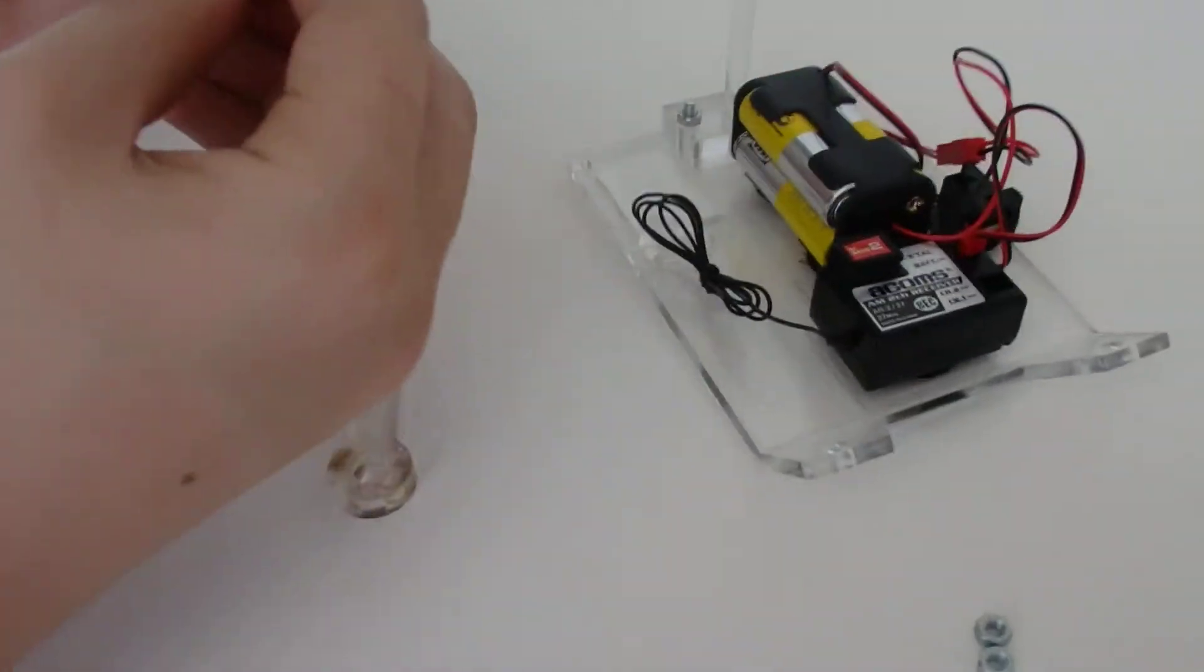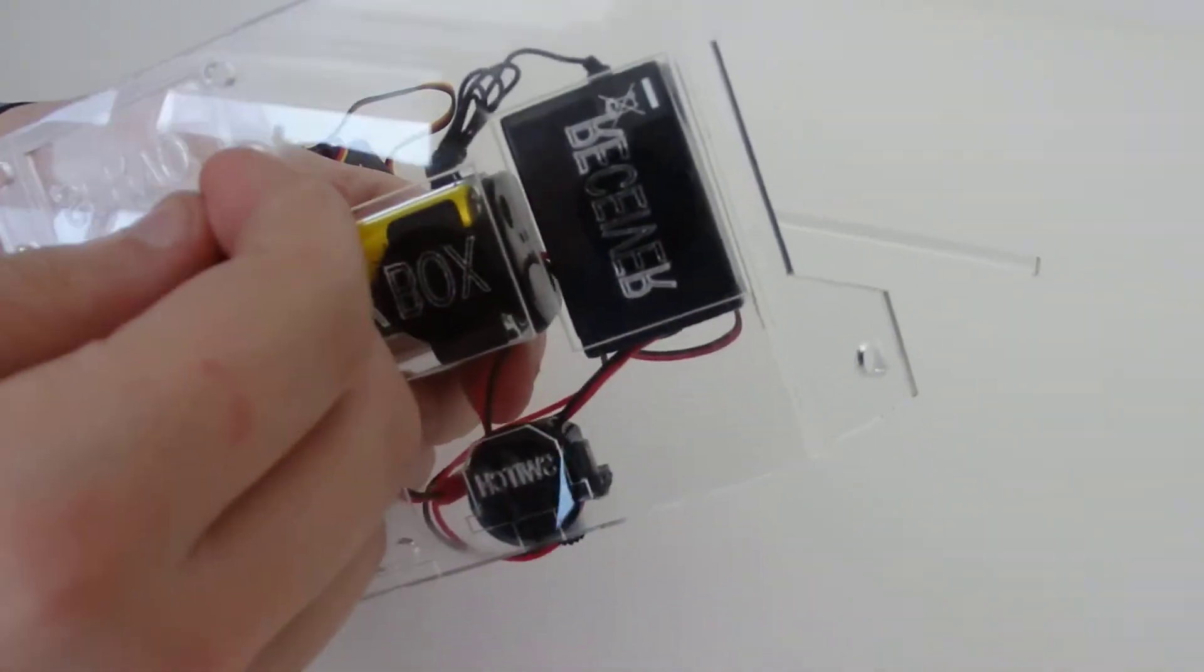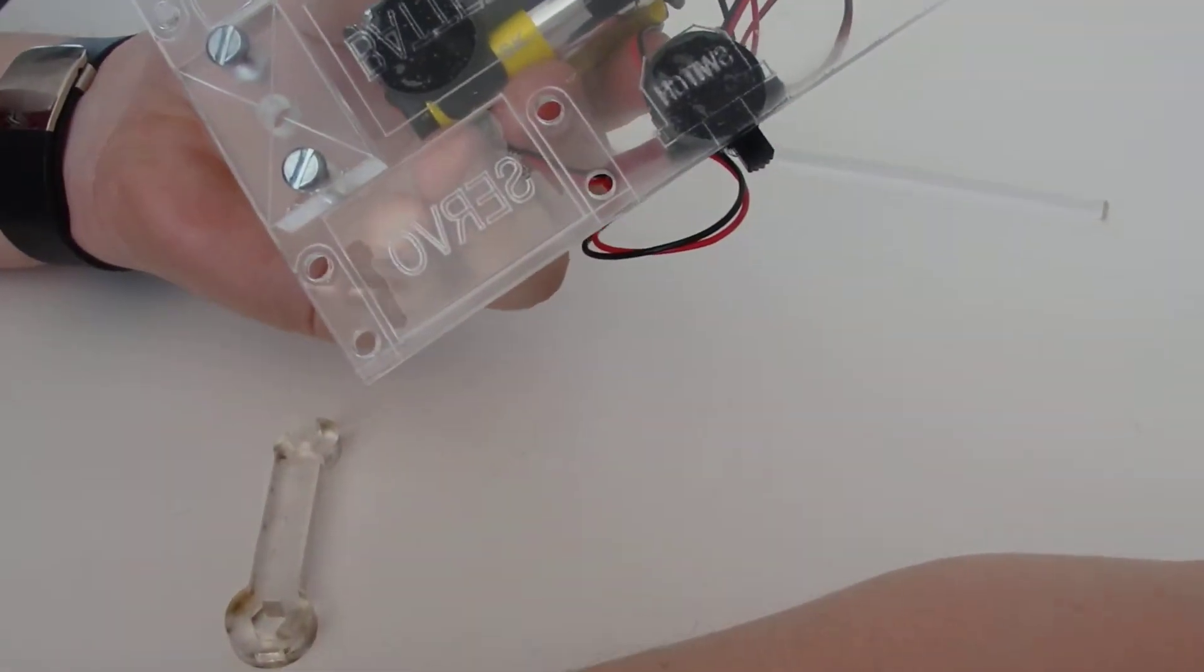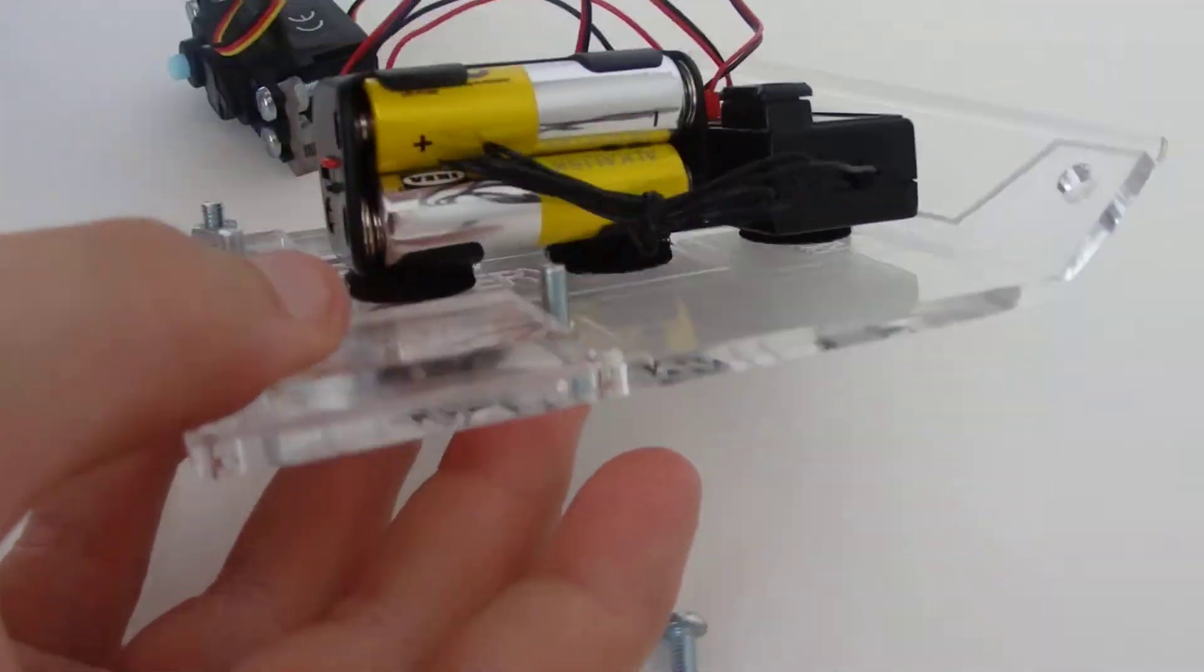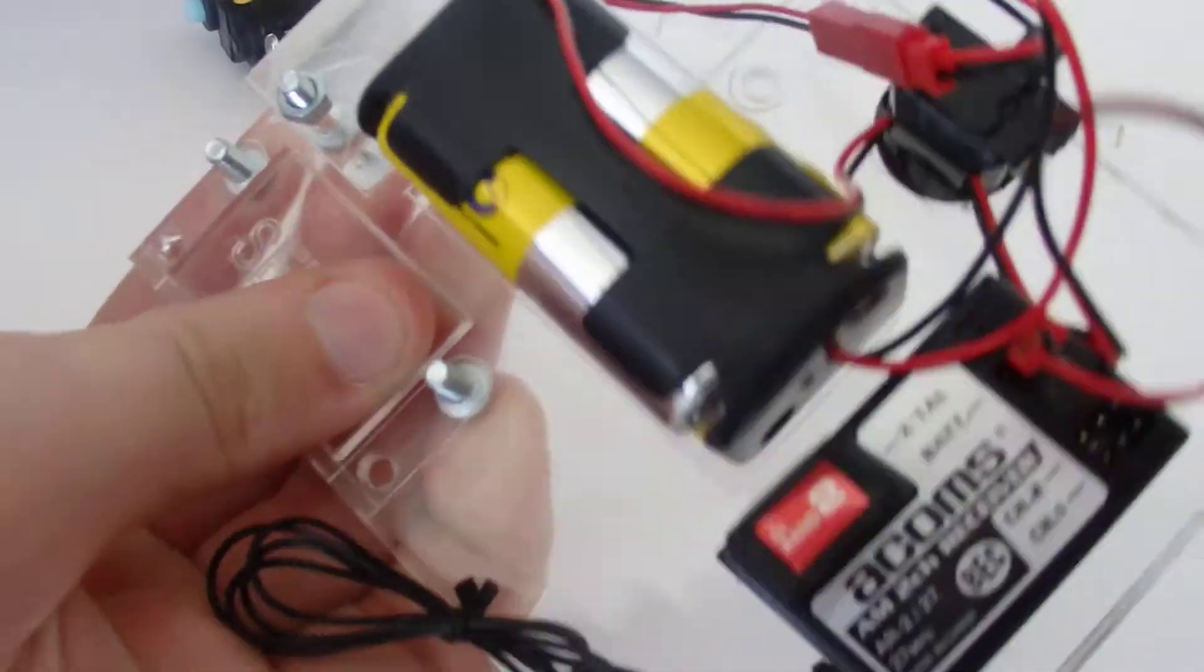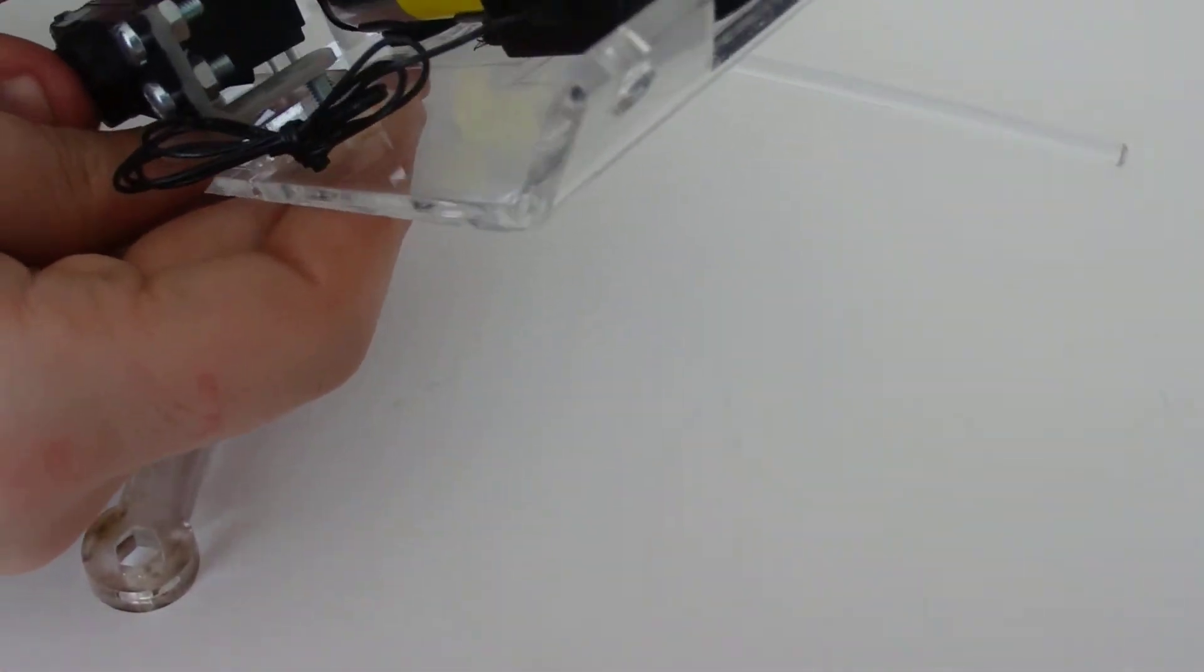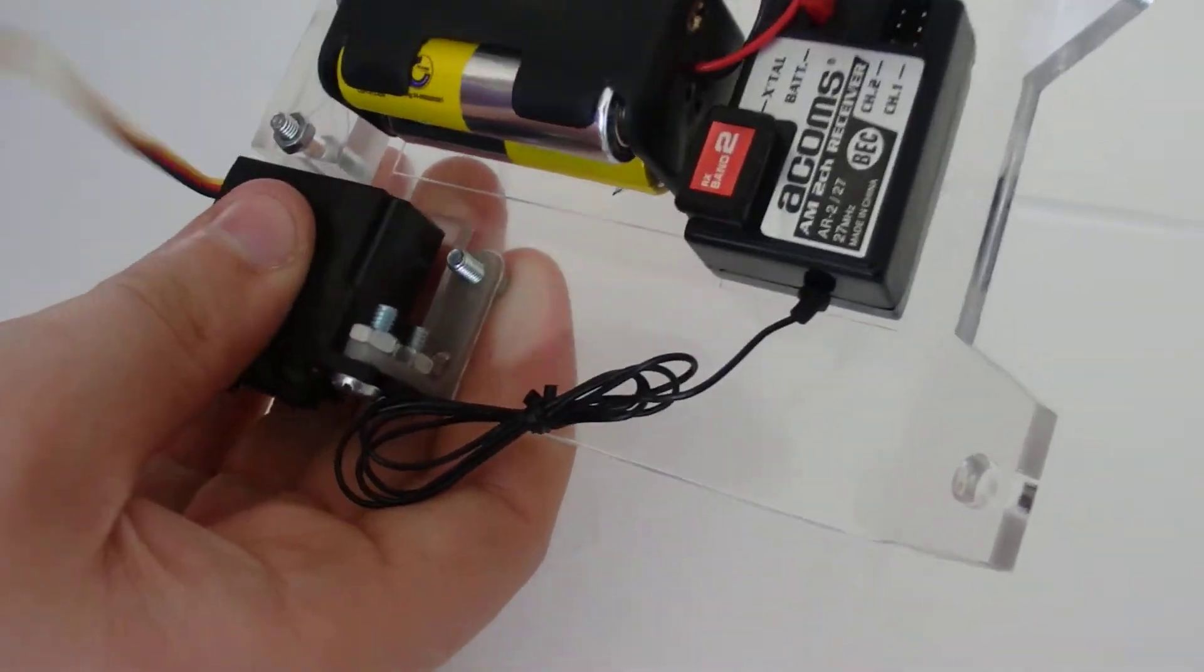Now I am going to fit it to the base. Make sure that you put the bolts through the base and put the nuts on the top, so when the minibot is moving it will move easier because there is nothing stopping it from moving.